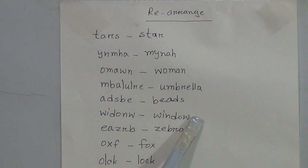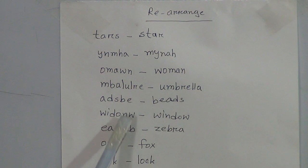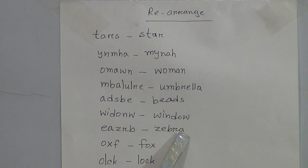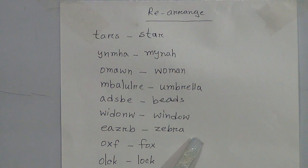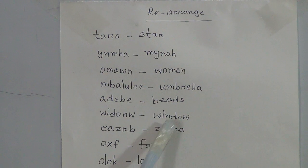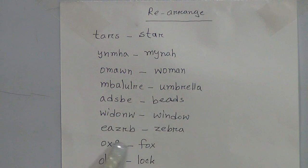Then the next jumbled letters: W, I, D, O, N, W, O. If we arrange these jumbled letters, we will get a meaningful word: window. Spelling is W-I-N-D-O-W, window.